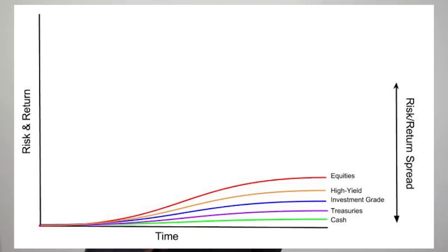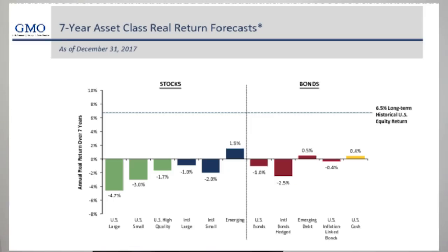And by this point, no one wants to hold stocks, which is why we get bear markets as investors sell their stocks and allocate towards cash and bonds. Now let's actually measure the risk premium in the current market.